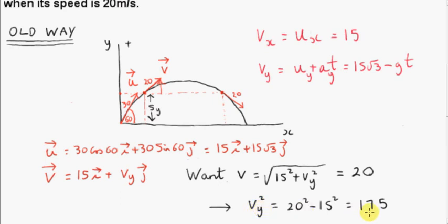The square of vy is 175. So if we get the square root of 175, we can get either a positive or a negative quantity, and that makes sense. The positive quantity is the situation when the particle is on the way up, and the negative value of vy occurs when the particle is on the way down, because then vy is pointing in the negative direction. We will leave our answer as vy squared for now, because we can use a handy formula to relate sy with vy and uy.